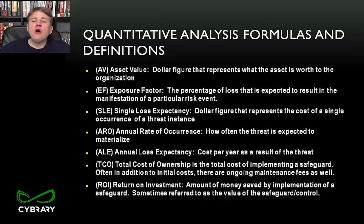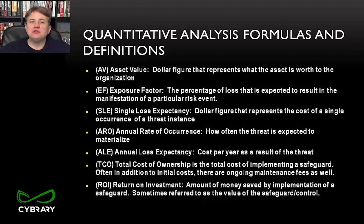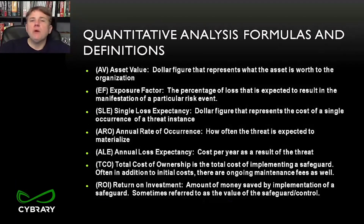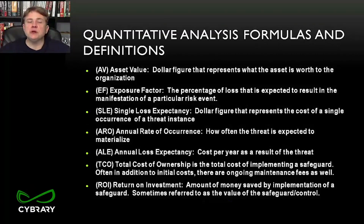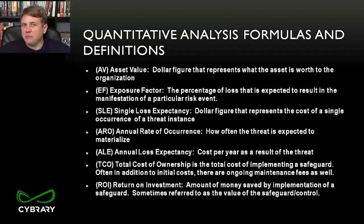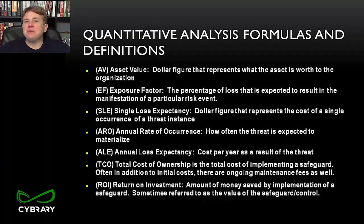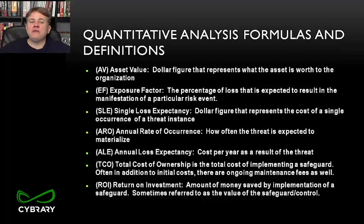Total cost of ownership refers to how much it costs to implement a control over its entire lifespan. For example, antivirus software may have an upfront cost of $5,000 plus a $1,000 annual maintenance fee — both factor into total cost of ownership. Return on investment measures how much that safeguard has saved you — for every dollar spent, what did you get back? All of these concepts are critical to understanding loss potential.